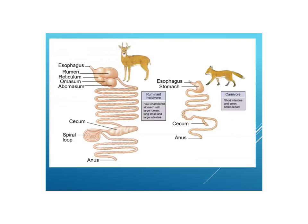You can tell by the intestines and digestive system of an animal what they eat. In an herbivore, you'll see multiple stomachs for digesting cellulose, a very long small intestine to absorb the nutrients, an auxiliary structure called the cecum, and a large intestine. In a carnivore, you'll see just a single stomach and a fairly short intestine, because it's quick and easy to digest protein compared with all that cellulose.